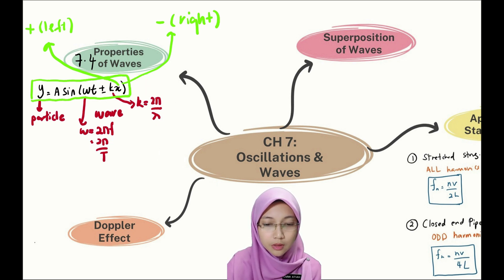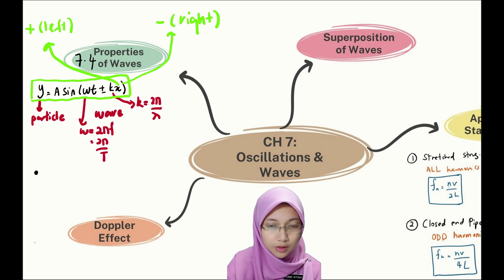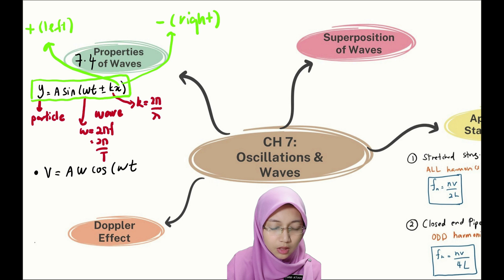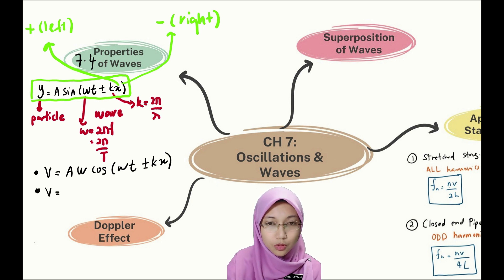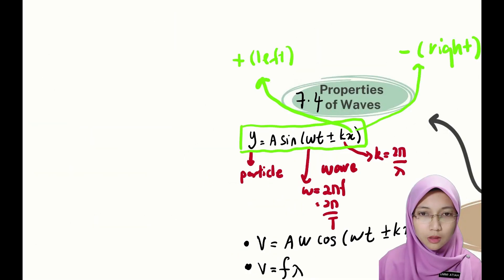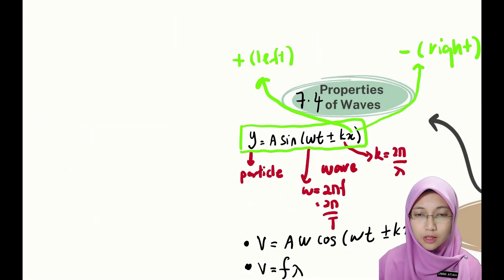Apart from the wave direction, when we have particle vibration we also have particle velocity. The equation for particle velocity is aω cos(ωt ± kx). We also have the velocity of the wave itself, where v equals frequency times wavelength. Under the same subtopic 7.4, we also have graph sketching.